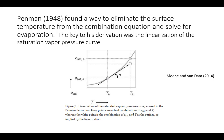Penman, in 1948 — and he was an incredible scientist with some very interesting biographical work — found a way to eliminate the surface temperature from the combination equation and solve for evaporation. He was originally working with wet surfaces like open water. The key to his derivation was the linearization of the saturation vapor pressure curve. If air temperature and surface temperature are reasonably close together, he could use that to his advantage — that was his really clever idea.